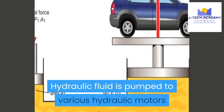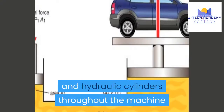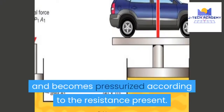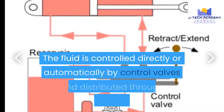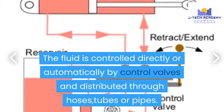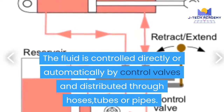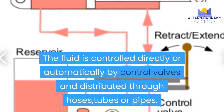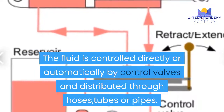Hydraulic fluid is pumped to various hydraulic motors and hydraulic cylinders throughout the machine and becomes pressurized according to the resistance present. The fluid is controlled directly or automatically by control valves and distributed through hoses, tubes, or pipes.